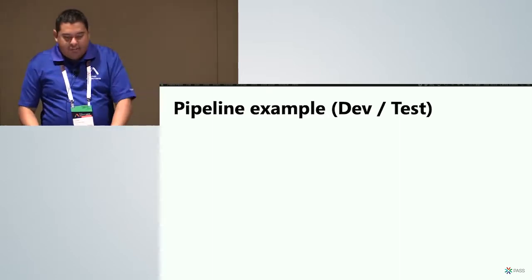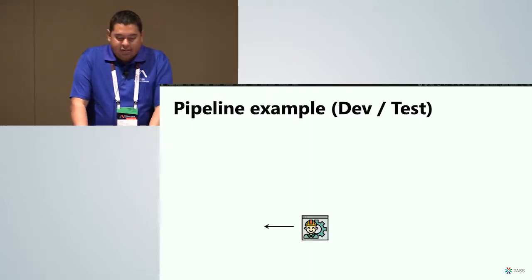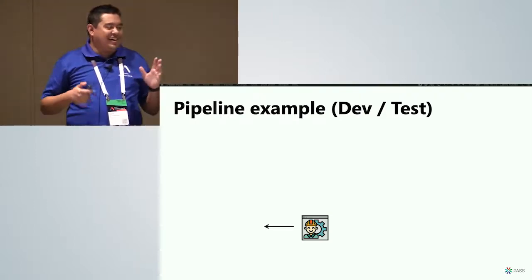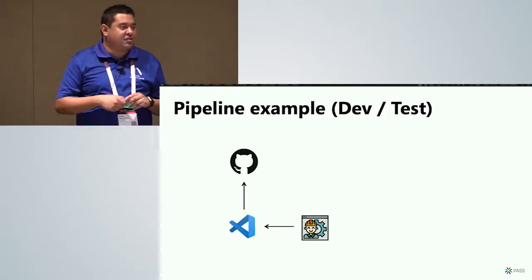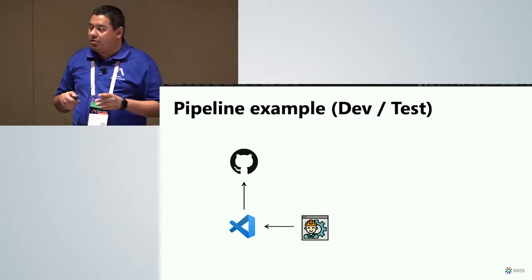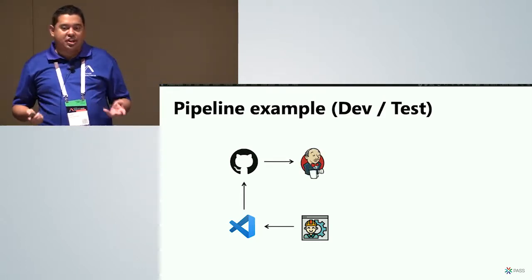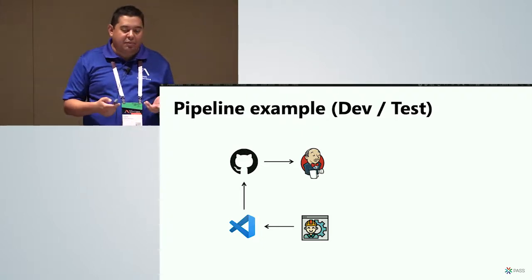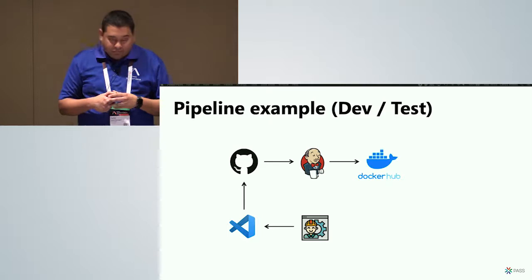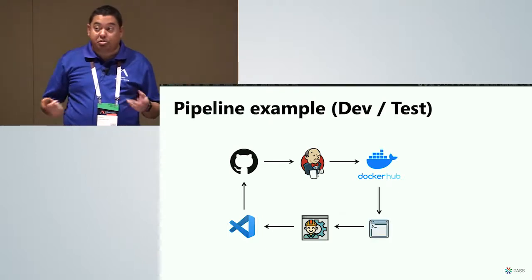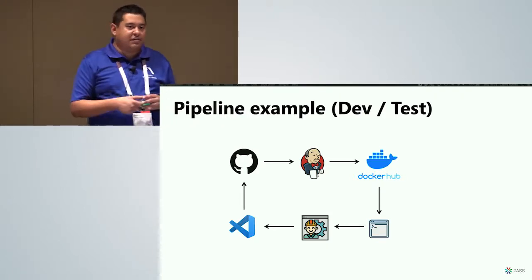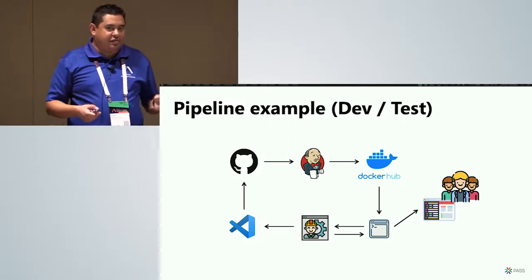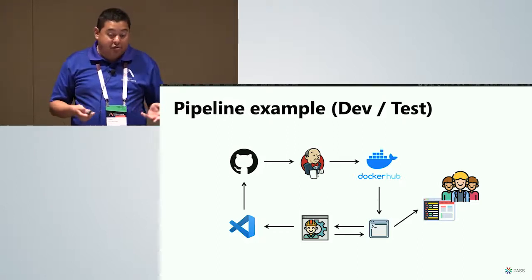Here's an example of using a deployment pipeline for a dev and test environment. We have our database developer making changes in Visual Studio Code and committing them to a GitHub repository. Jenkins takes over and builds the image, then ships it into a repository like Docker Hub. Once the image is published, the happy engineer can download a copy locally and start doing local testing or developing a new feature.